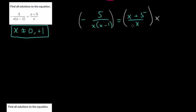At this point, let's do some multiplication so we can cancel out these denominators. If we multiply each side by x, these will cancel. If we multiply each side by x minus 1, this denominator will cancel out. On the left hand side, the x and x minus 1 will cancel out and we'll just get negative 5. On the right side, the x's cancel out and we'll just get x plus 5 times x minus 1.